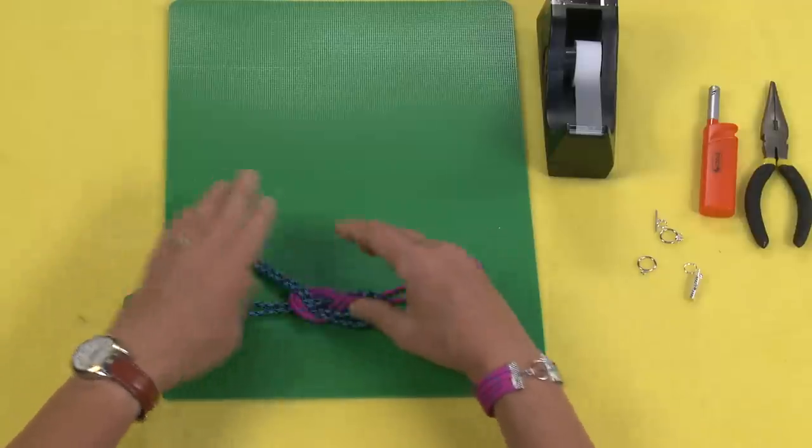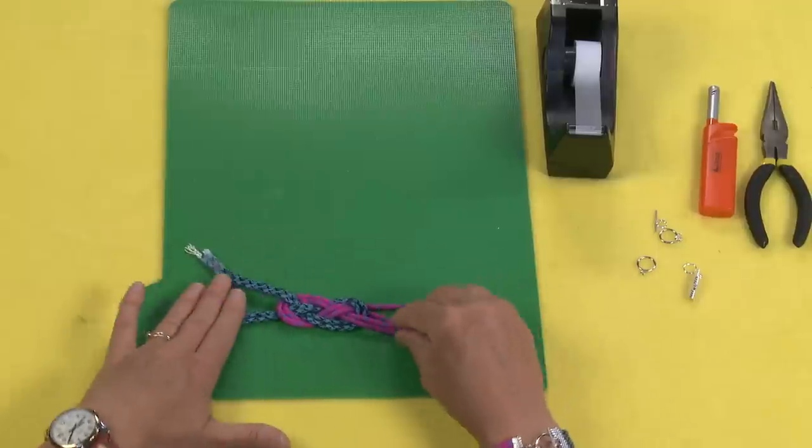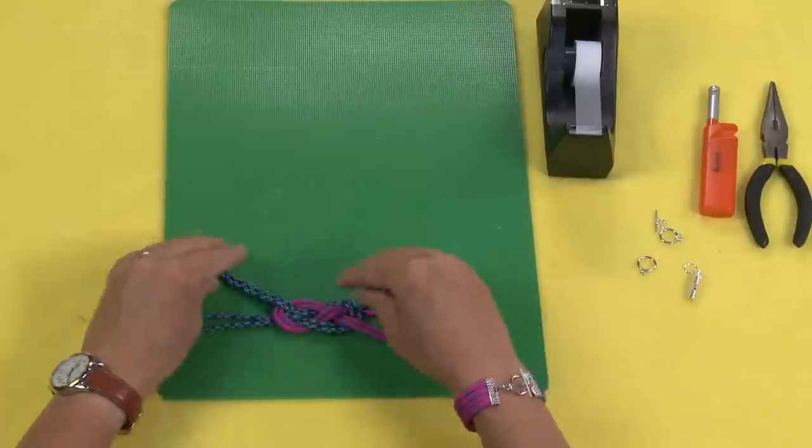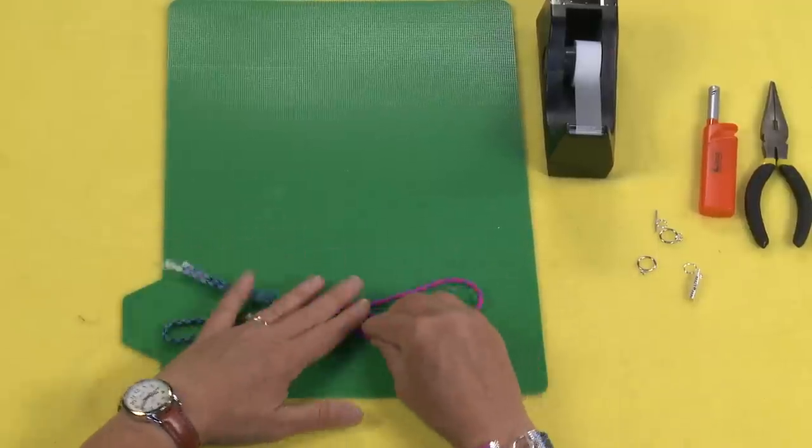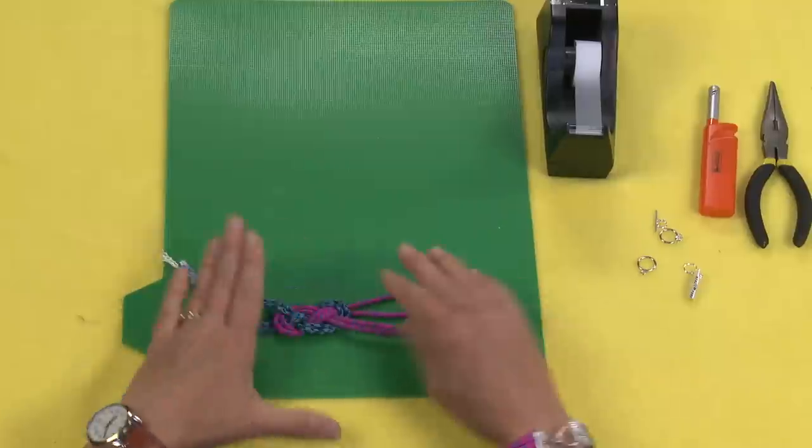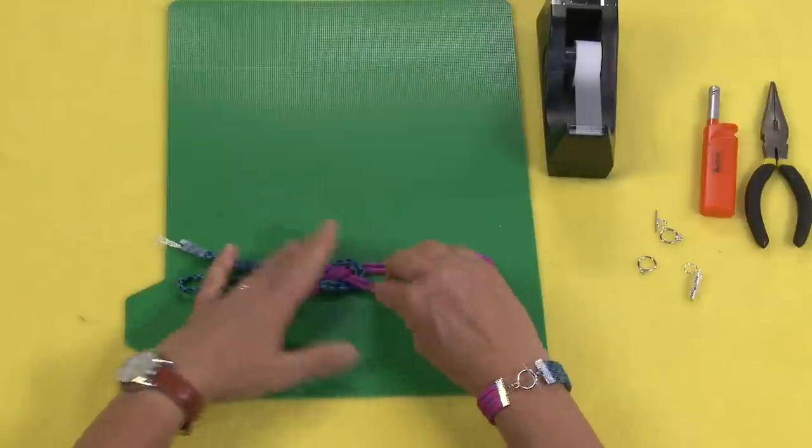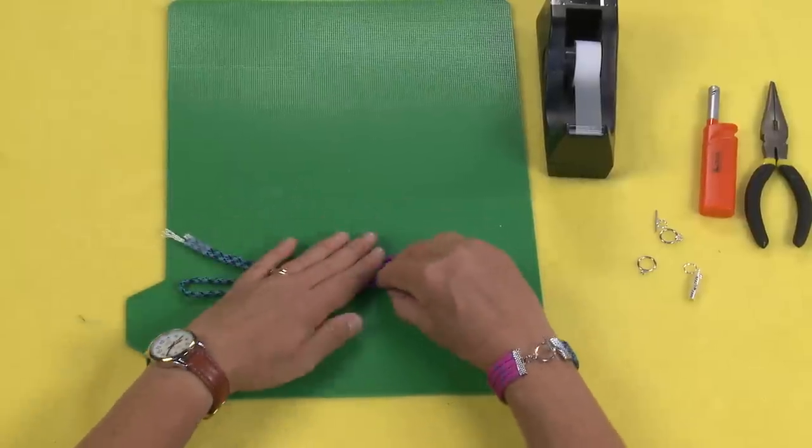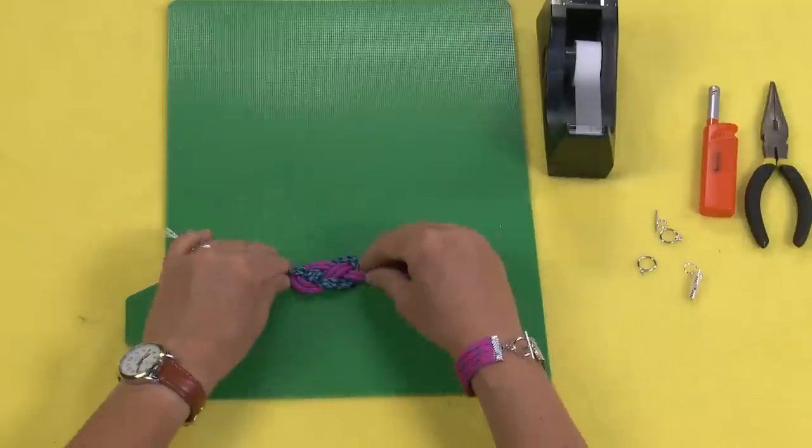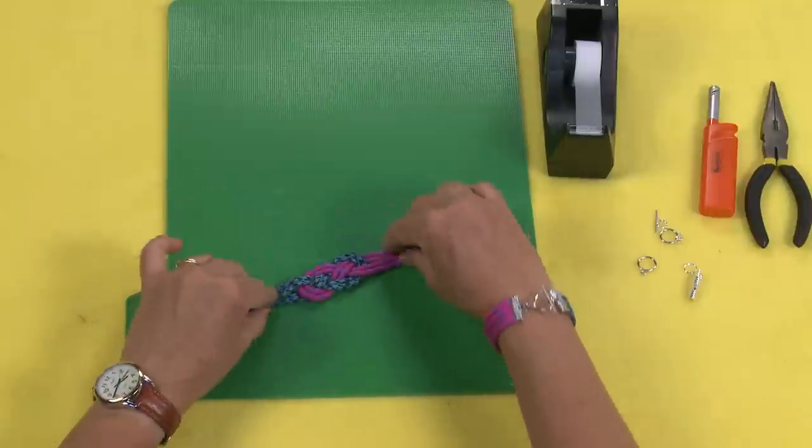Super important that they lay nice and flat. Now what you're going to do is scooch and scooch so that you get them to make a nice tight knot and that these are even and that this side is even. There's your beautiful knot. Isn't that gorgeous? And again, I can't stress enough how important it is to make sure that they lay side by side while you're doing all this.